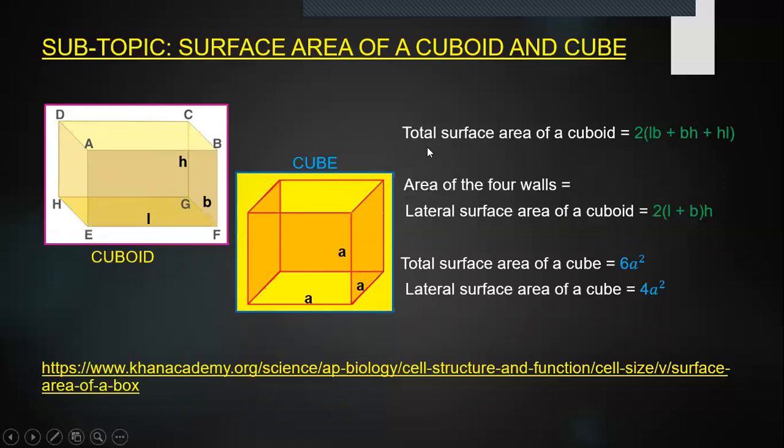What is the total surface area of a cuboid? If you add all the six surfaces that you can see over here, it's going to be 2(lb + bh + hl). Then we also have the area of the four walls, which we call the lateral area of a cuboid, which is given by 2(l + b)h.